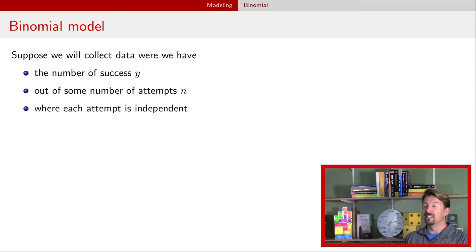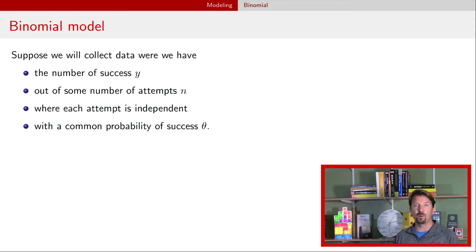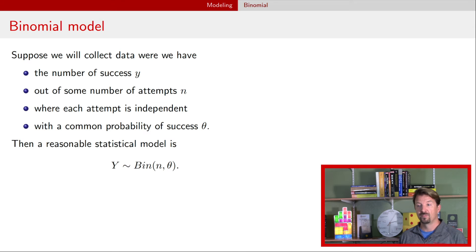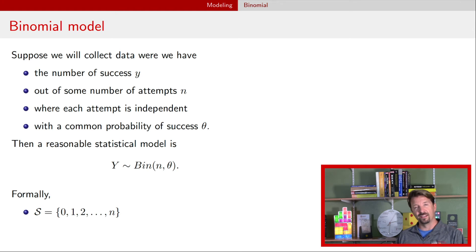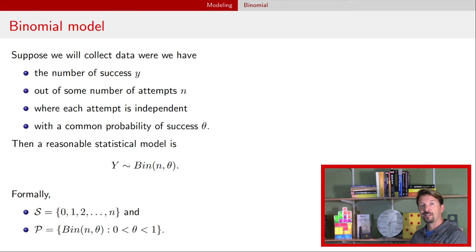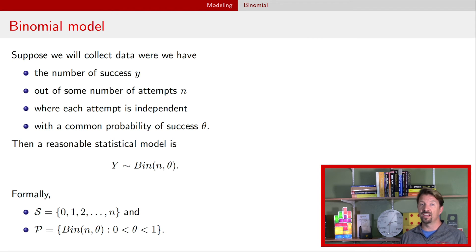The experiment is set up such that each attempt is independent — knowing the result of any number of other attempts doesn't tell you anything about the remaining attempts — and each attempt has the same probability of success, which we call theta. We might write that our random variable y has a binomial distribution with n attempts and probability of success theta. Bringing this back to script P and script S: script S is the integers 0 up to n, and script P is the collection of binomial distributions determined by a particular value for theta, which could be anywhere between 0 and 1.